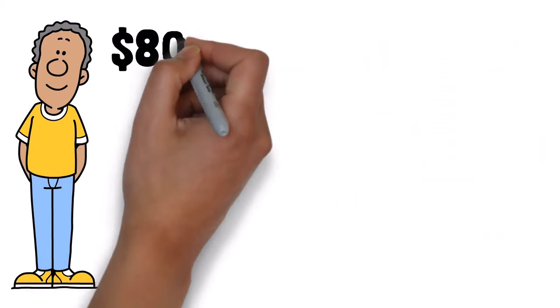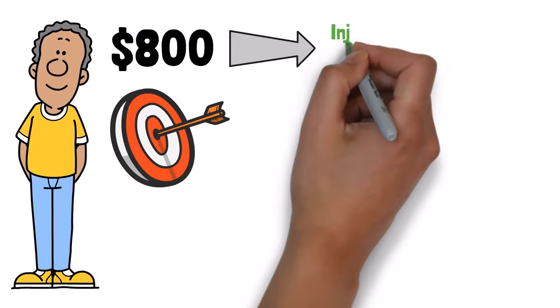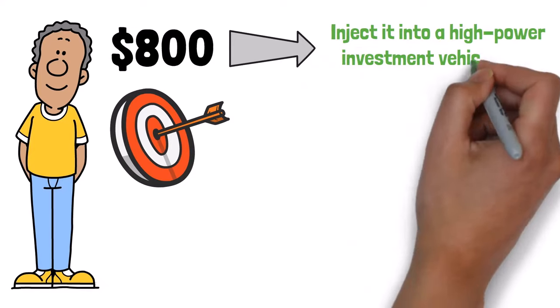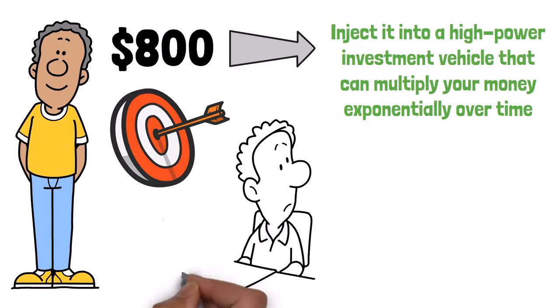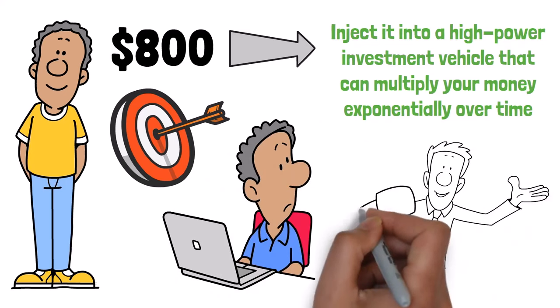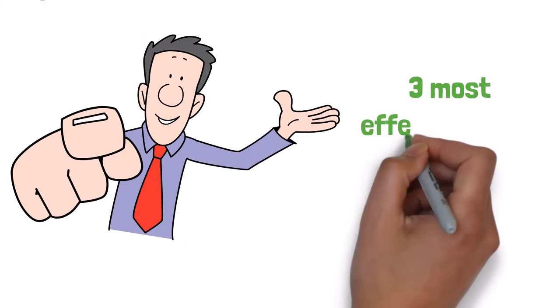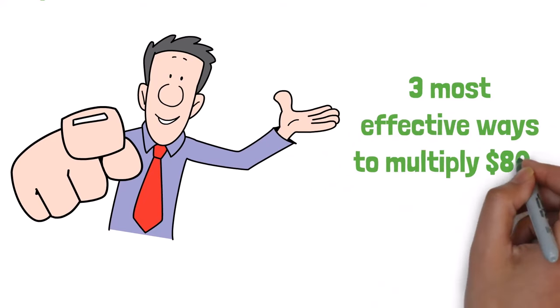Assuming that all you have is $800, your goal is to inject it into a high-power investment vehicle that can multiply your money exponentially over time. So how do you make this happen? In this video, I'll show you the three most effective ways to multiply $800.